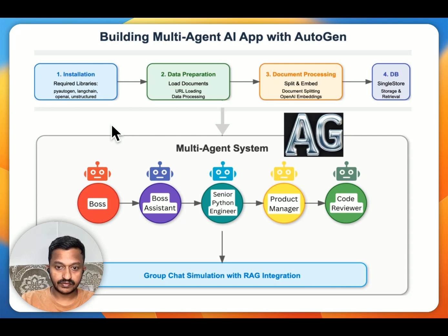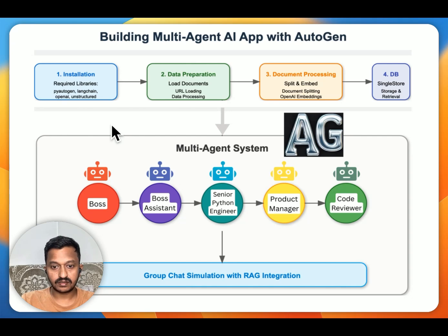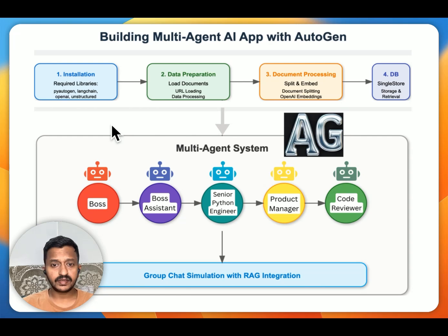The second step is data preparation — loading the document we're using. The third step is document processing — splitting and creating embeddings. The fourth step uses a vector database like SingleStore to store those vector embeddings. Autogen enables configuring multiple agents: a boss agent, boss assistant, senior Python engineer agent, product manager agent, and code reviewer agent, all coming together to solve any Python problem or anything related to the document we share.